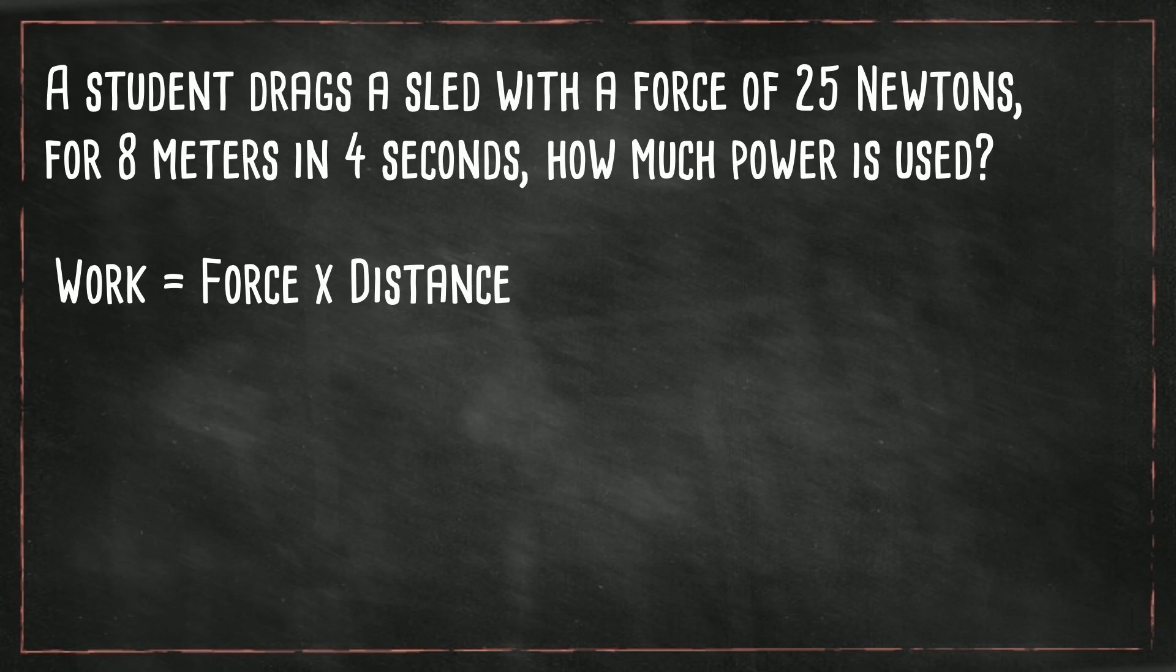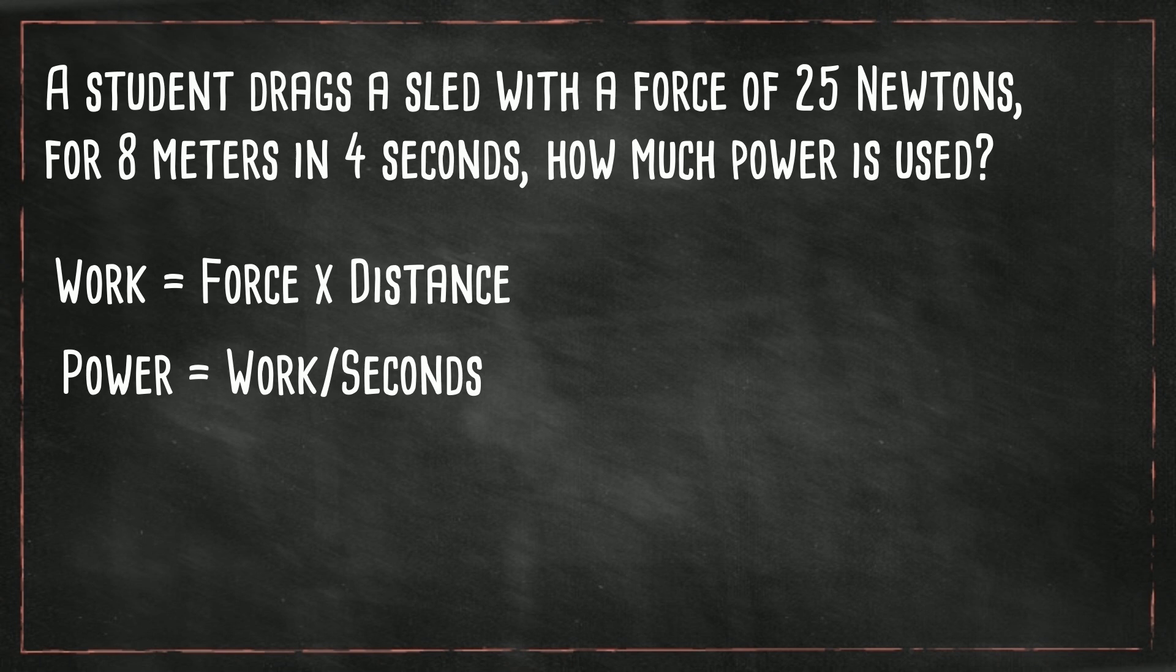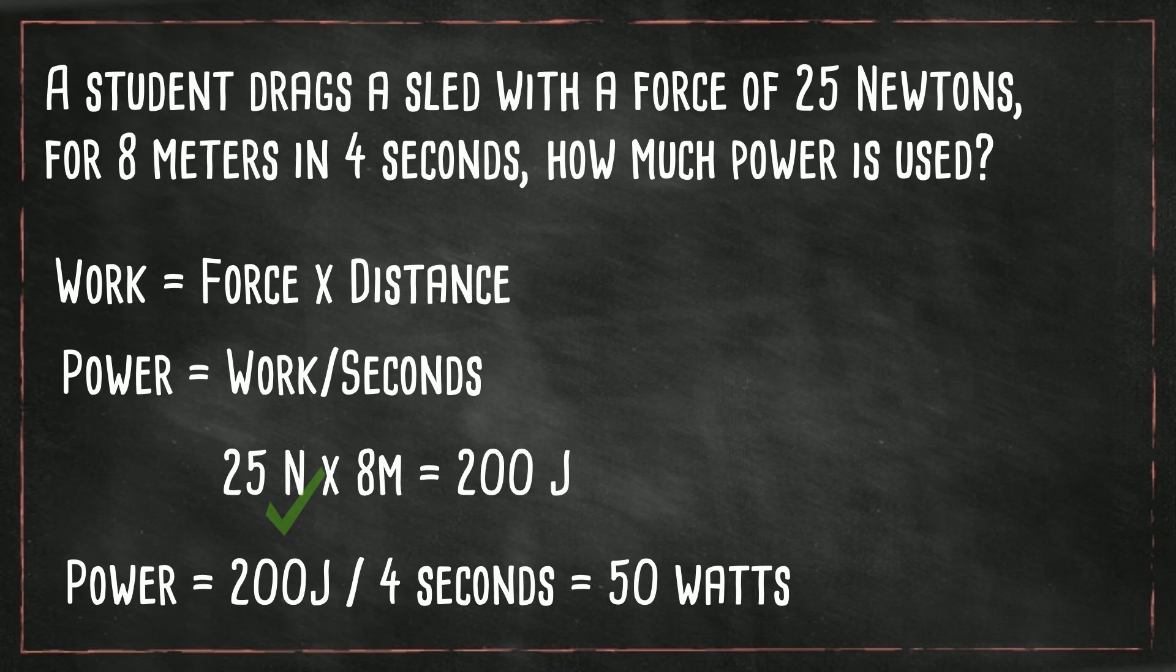Let's first figure out what work is. We have a force of 25 newtons and it is moved eight meters, so that gives us 200 joules. Next let's plug the work into the formula for power. We have 200 joules divided by four seconds, and that equals 50 watts.